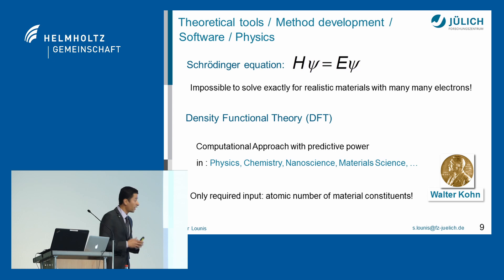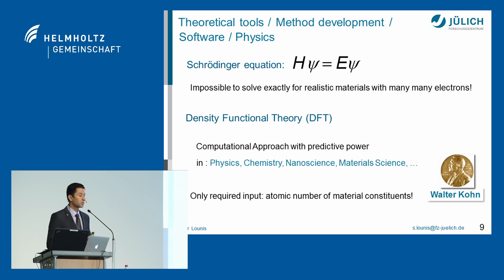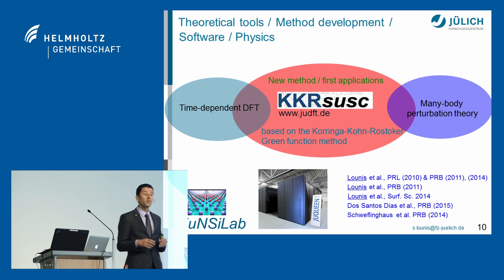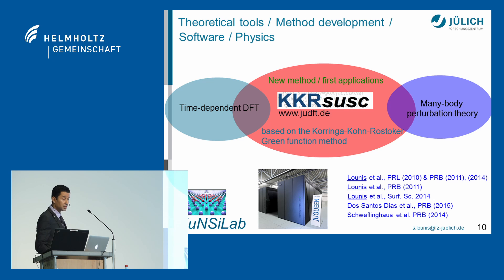The nice thing with density functional theory is that you can predict whether a material can exist or not, even if it is not yet realized experimentally. What we do is push this theory to its limit by looking at the time domain — how these magnets rotate and interact with a realistic ocean of electrons. To do that, we developed a unique software called KKR-SUSC, made possible via Hagee funding of my young investigator group, FancyLab, along with supercomputing power in Jülich.